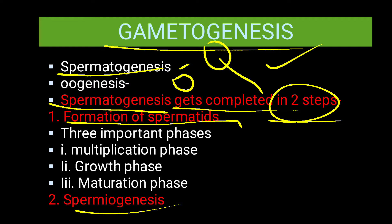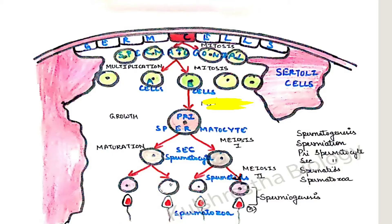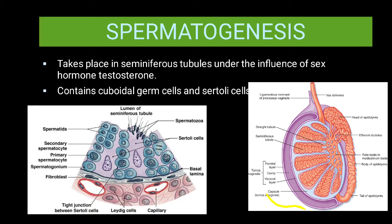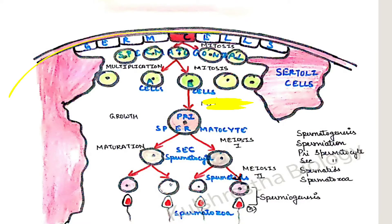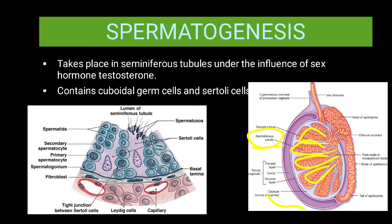Formation of spermatids takes place in three phases. First is the multiplication phase, second is the growth phase, and third is the maturation phase. To understand this, let's look at a diagram of the testes — a longitudinal section. If you cut the testes, you will see that inside there are many lobules, and each lobule contains around one to four seminiferous tubules. Now let's see what happens inside the seminiferous tubules.